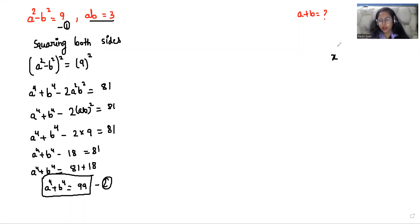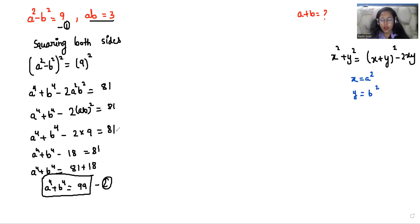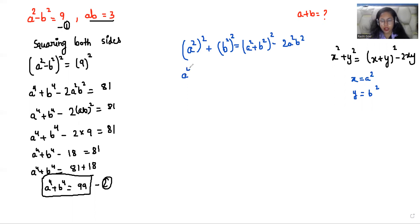Now we have the formula: x squared plus y squared is equals to x plus y whole squared minus 2xy. I'm going to use this by assuming x as a squared and y as b squared. So a squared whole squared plus b squared whole squared — that is a power 4 plus b power 4 — can be written as a squared plus b squared whole squared minus 2ab whole squared.